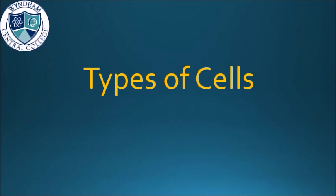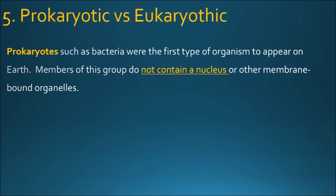Today we have to talk about the types of cells. There are mainly two types of cells. First, we start with prokaryotes, something that is a very interesting type of life. Good examples are bacteria, and they are the first type of life that has ever emerged on Earth. So for billions of years, Earth was covered in prokaryotic life.